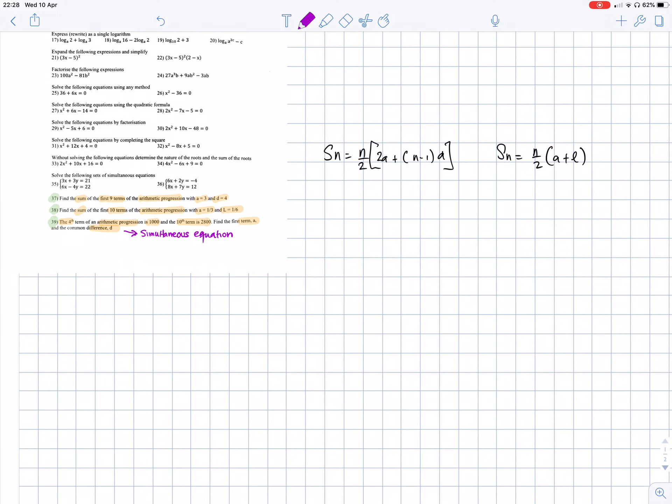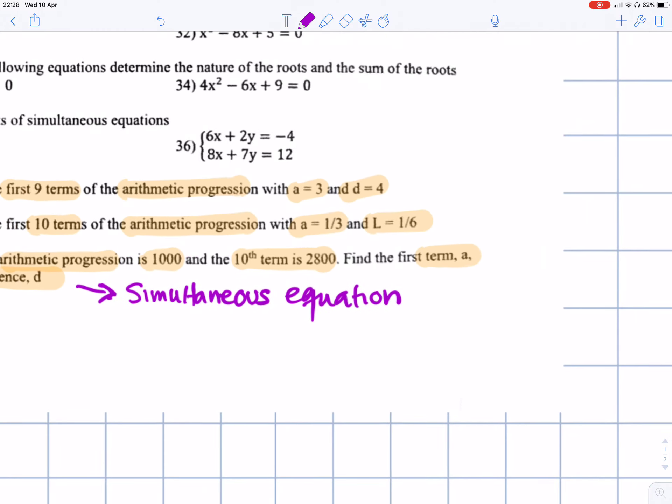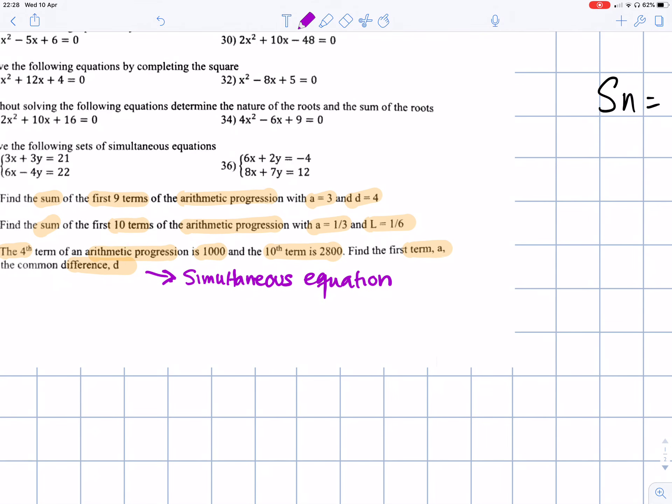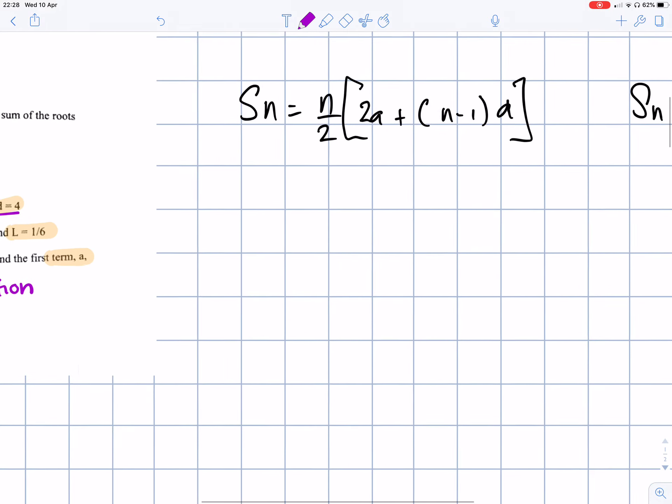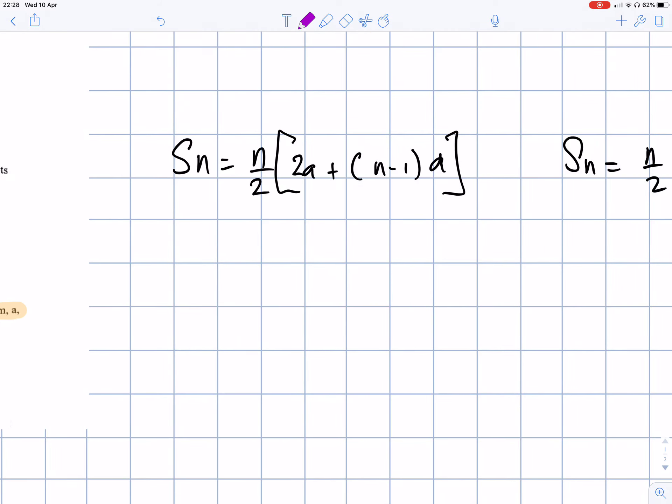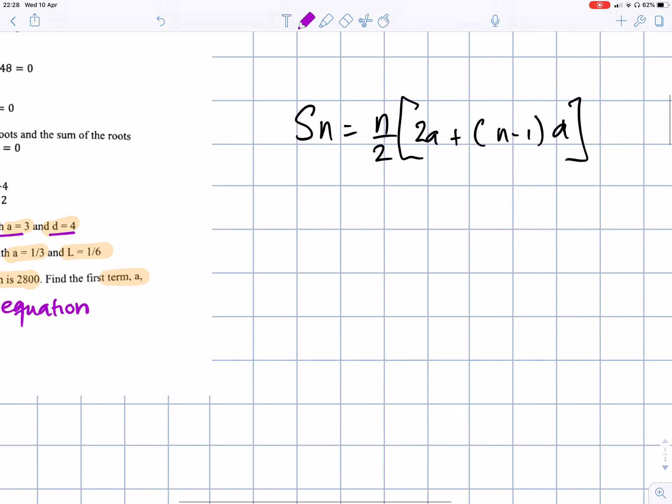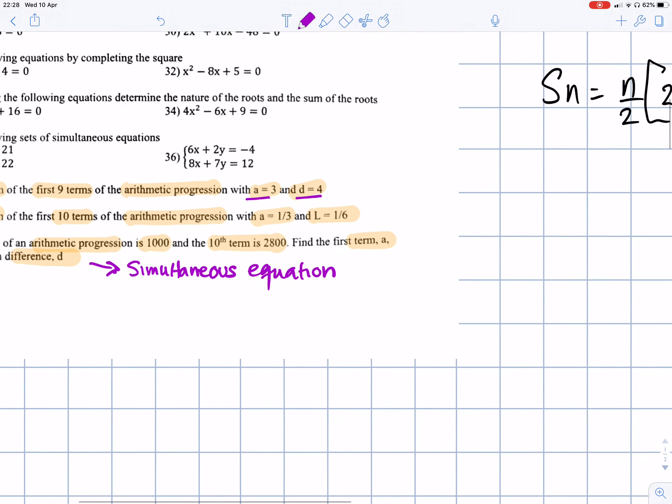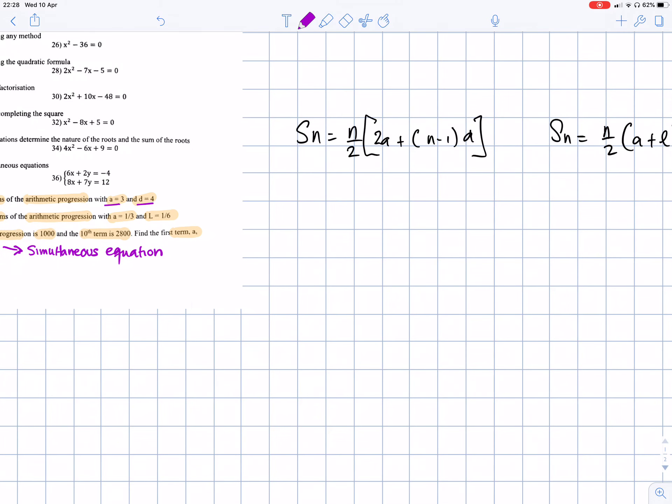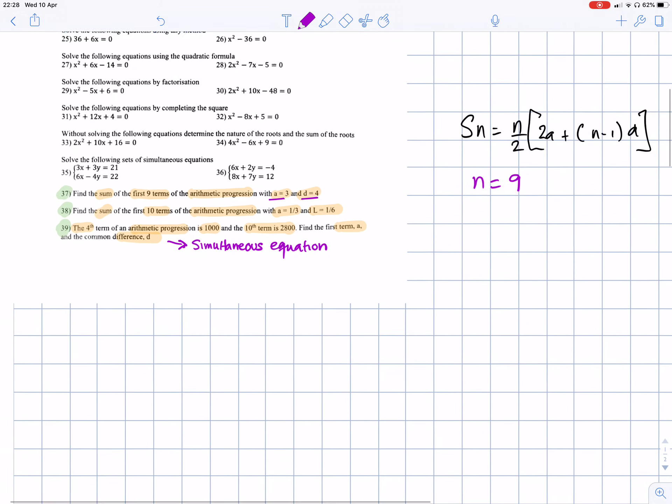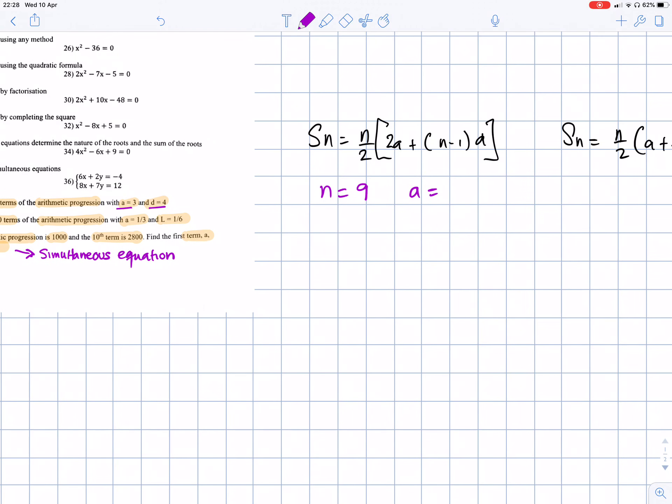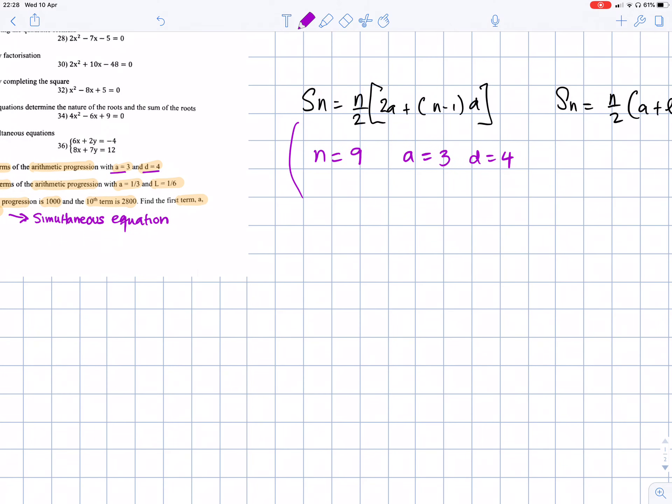To start off with the first one, question 37, we are given the sum of the first nine terms. So given a and d, we're going to use this equation which is Sn equals n divided by 2 brackets 2a plus n minus 1 times d. What is n? It says the first nine terms, so n equals nine.